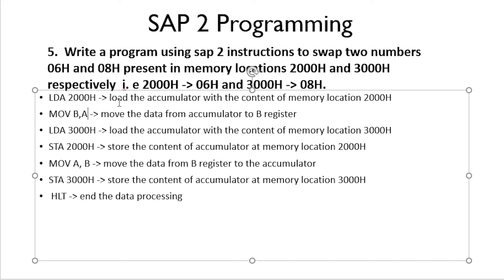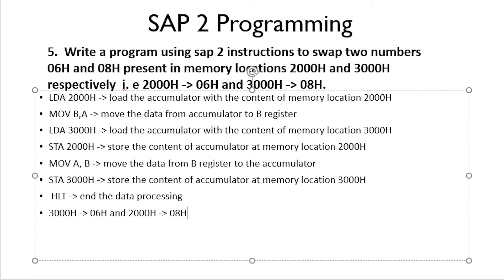To summarize: the LDA 2000H instruction loads the accumulator with the content of 2000H, which is 06H. Then MOV B, A moves 06H to register B. Next, LDA 3000H loads 08H into the accumulator, and STA 2000H stores it at 2000H — the first swap is done. Then MOV A, B moves 06H back to the accumulator, and STA 3000H stores it at 3000H. The final result: 3000H contains 06H and 2000H contains 08H.